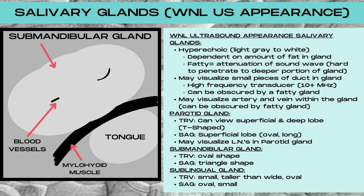The normal ultrasound appearance of the three major salivary glands is going to be a hyperechoic echo texture, ranging from a light gray color to white, and this is dependent on the amount of fat in the glands. The fattier the gland, there's going to be more attenuation of the sound waves, making it harder to penetrate to deeper portions. This is very similar to what happens in a fatty liver on ultrasound, so it may require decreasing the frequency in order to penetrate deeper into the glands.